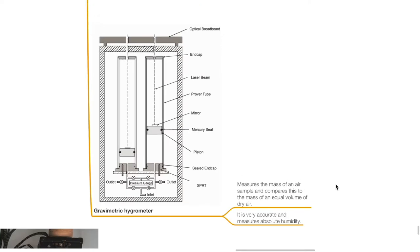The gravimetric hygrometer measures the mass of an air sample and compares this to the mass of an equal amount of dry air. It is very accurate and measures absolute humidity.